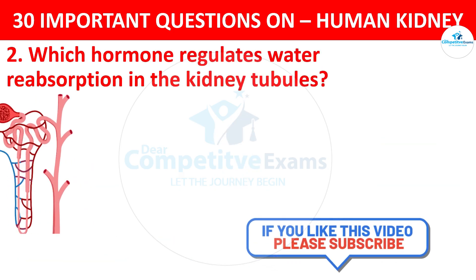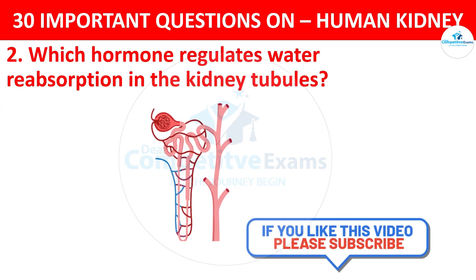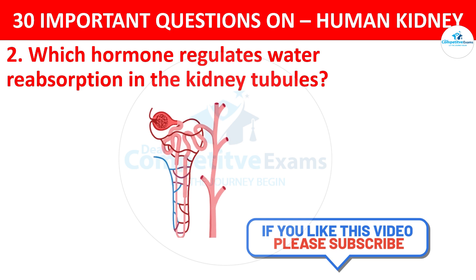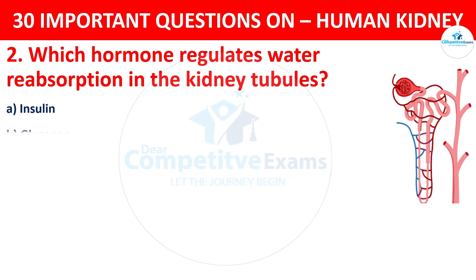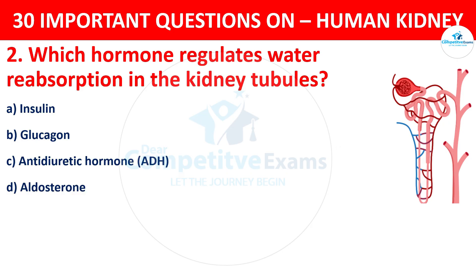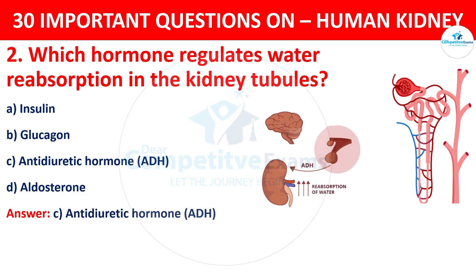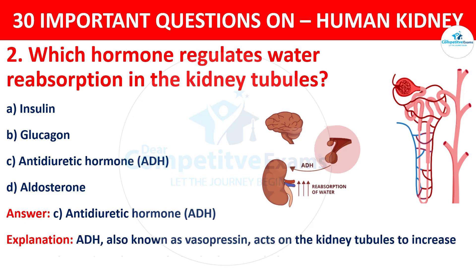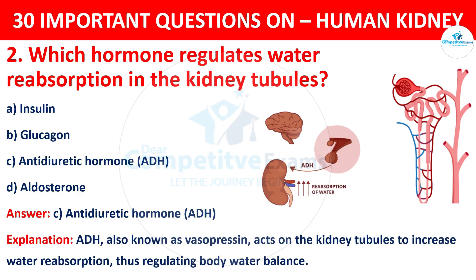Which hormone regulates water reabsorption in the kidney tubules? Your options are: Insulin, Glucagon, Antidiuretic Hormone, or Aldosterone. The correct answer is C, i.e. Antidiuretic Hormone. ADH, also known as Vasopressin, acts on the kidney tubules to increase water reabsorption, thus regulating body water balance.